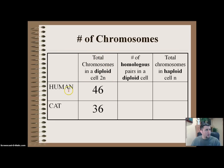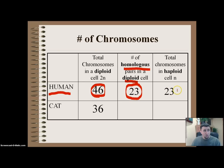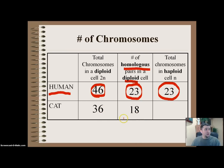In a human being we find 46 total chromosomes in somatic cells. The number of homologous pairs found in a diploid cell is 23 — you have one from your mom and one from your dad, each controlling the same trait. So the total number found in a haploid cell is 23 — either one from mom or one from dad. In a cat, there are 36 total chromosomes, so 18 homologous pairs in a diploid cell and 18 in a haploid cell.